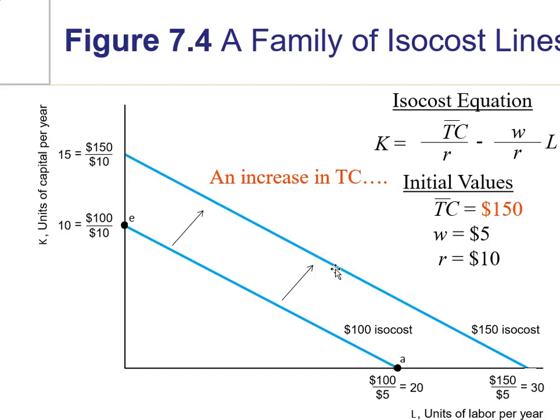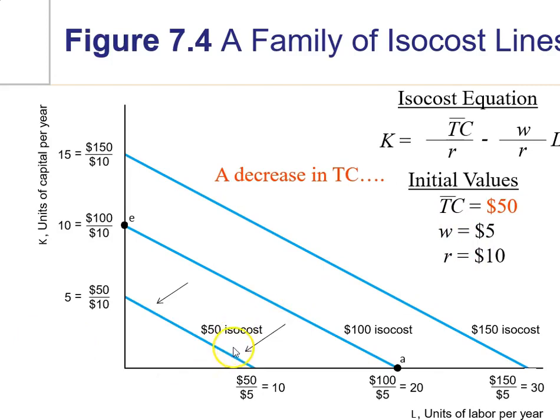Likewise, you could spend less money. Don't spend $100. Spend something like $50. Well, once again, that doesn't change your input prices. So, your slope stays at negative 1/2. It simply pulls the isocost a little closer to the origin. And so, this is an isocost of 50, isocost of 100, and isocost of 150.